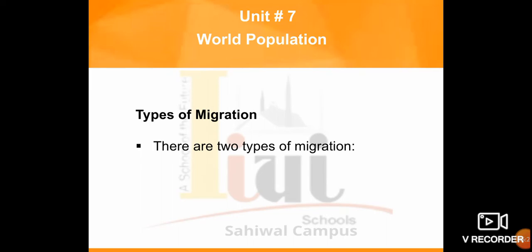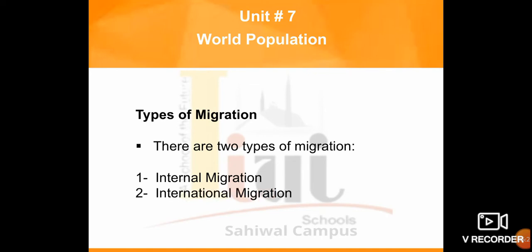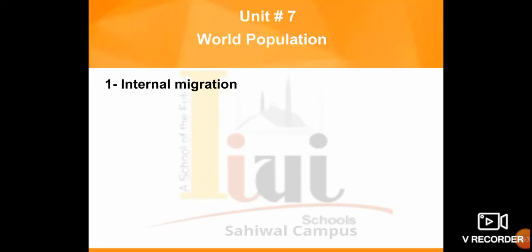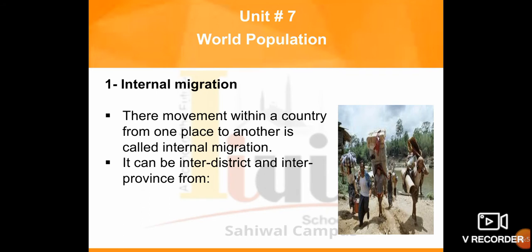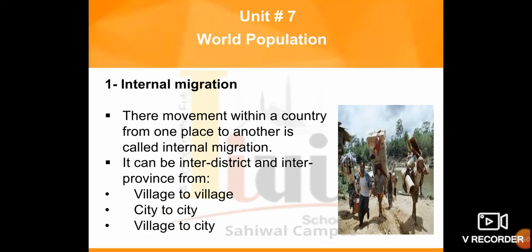There are two types of migration. The first is internal migration and the second is international migration. Internal migration is movement within a country from one place to another. It can be inter-district and inter-province — from village to village, city to city, village to city, or city to village. People can move from one village to another village, one city to another city, or from a city to a village. This is internal migration.